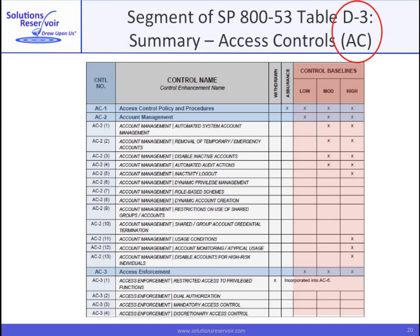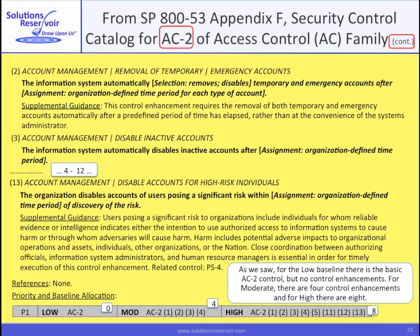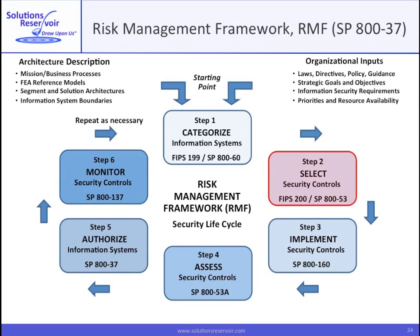In the next slide, we'll look at Table D3, which is the in-depth or expansion table for the access control family. This is a portion of Table D3 for the access control family. Here we see the expansion of AC-2, including the name of each sub-control. You may want to spend a little time with the upcoming reference slides, which show how the descriptions of AC-1 and AC-2 are presented in Appendix F. The selection of the requisite security controls completes Step 2 of the RMF. Note how you then implement and assess the controls, have the system authorized, and then go into the operational period and continuous monitoring.